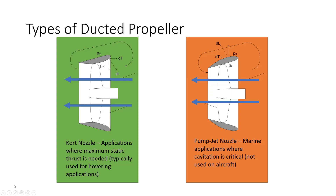Starting with the court nozzle, the duct is an aerofoil shape and that aerofoil shape actually generates some lift, but that lift is actually opposed to the direction of thrust. This is typically done so that the circulation generated by this aerofoil pushes more air through the duct and therefore provides more thrust. We typically see court nozzles used in applications where maximum static thrust is needed, for example on tugboats or on aircraft that need to hover.